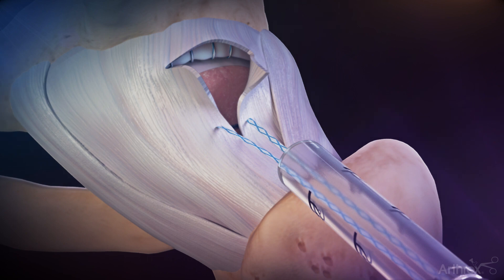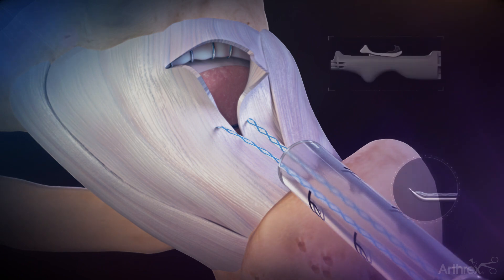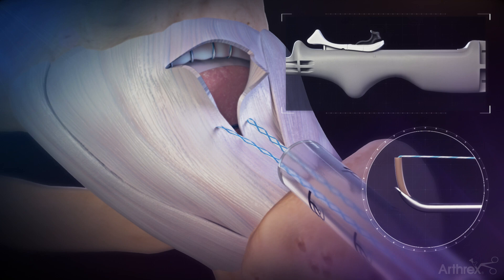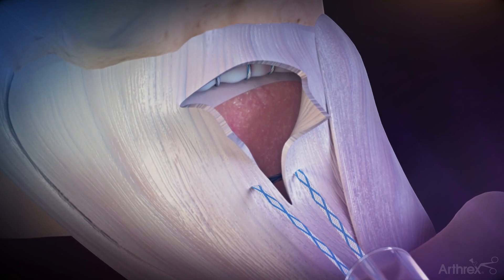Once the suture passer is outside of the arthroscopic cannula, release the suture by pushing the white sliding actuator forward, exposing the PEEK tubing, and then push the black switch forward to expose the nitinol jaws and the suture. Tie and cut the suture tails and repeat these steps for the additional stitches.